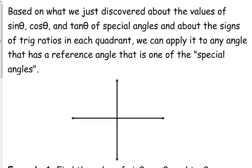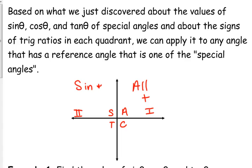On the signs — S-I-G-N — of our trig ratios in each quadrant. If y'all will remember, it is App State Teachers College, meaning all are positive in the first quadrant. In the second quadrant, sine and its reciprocal cosecant are positive.